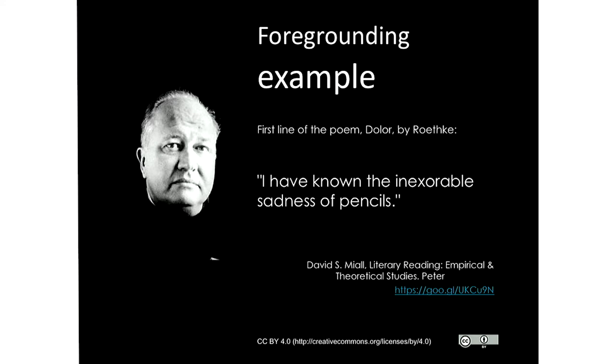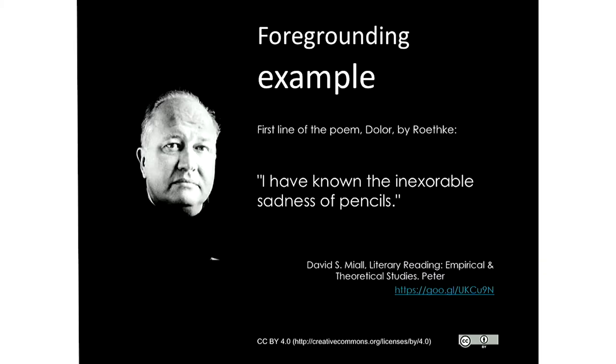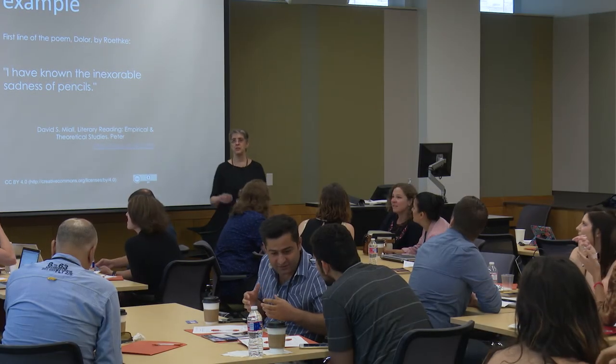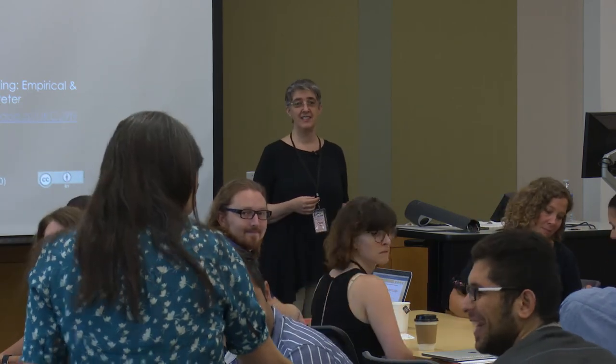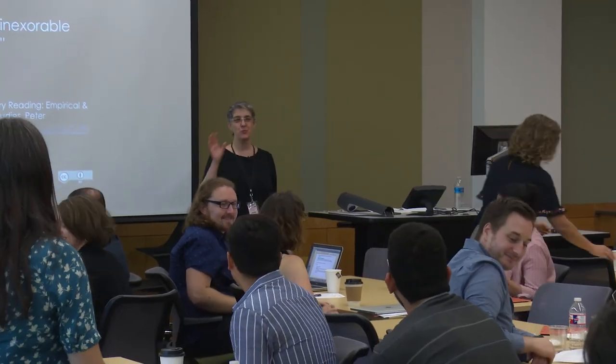Let's look at an example — this is the first line of a poem, titled 'Dolor' by Roethke: 'I have known the inexorable sadness of pencils.' There are four instances of foregrounding in this single line. Think about extra patterning; think about deviation. What do you see in this line? What I've noticed is ascribing human attributes to inanimate objects — personification. And we have a pretty obvious deviation from lexical norms: 'inexorable' is not part of everyday vocabulary for almost any native speaker.